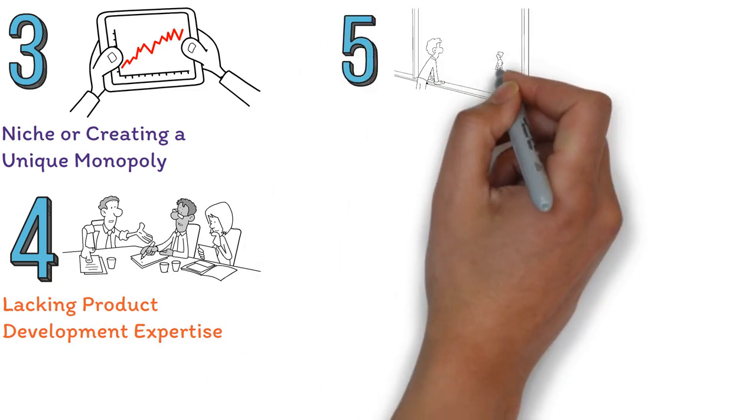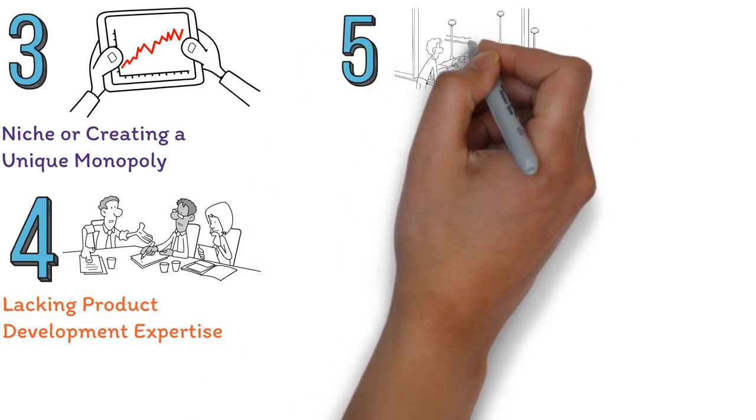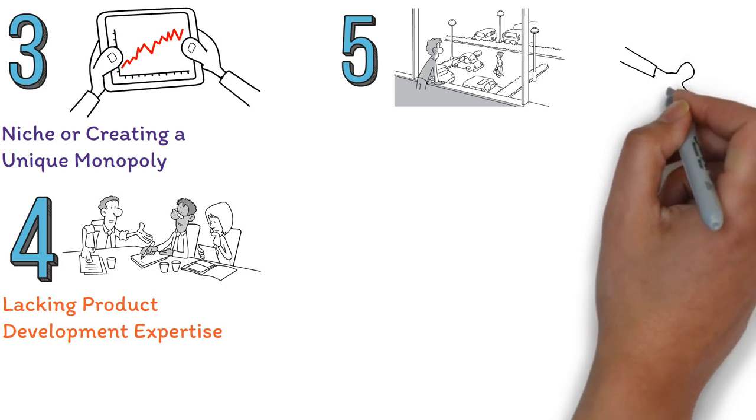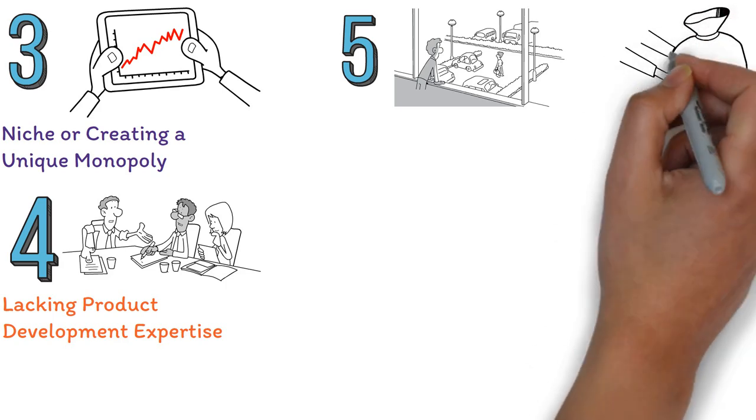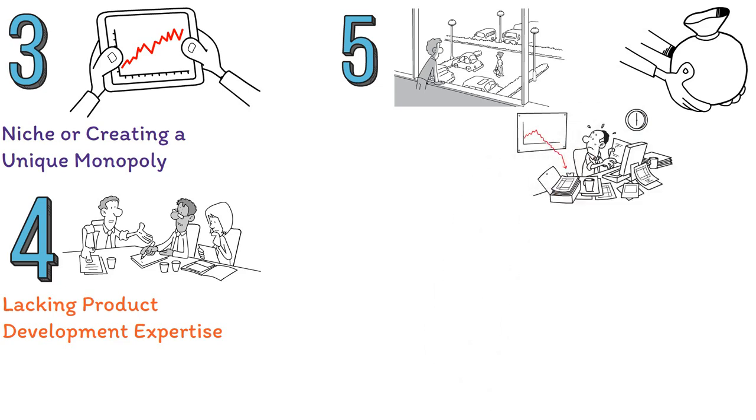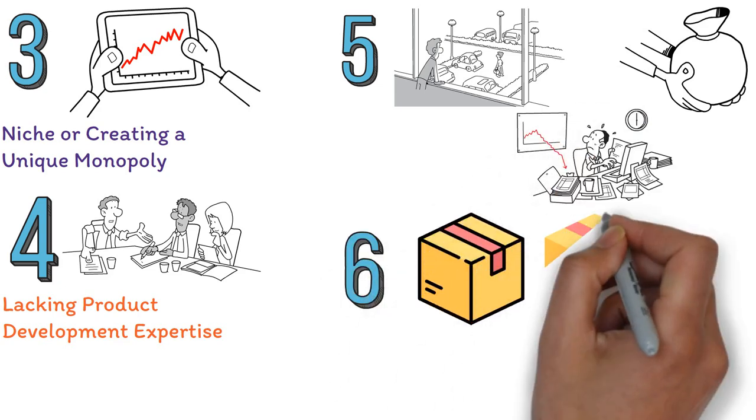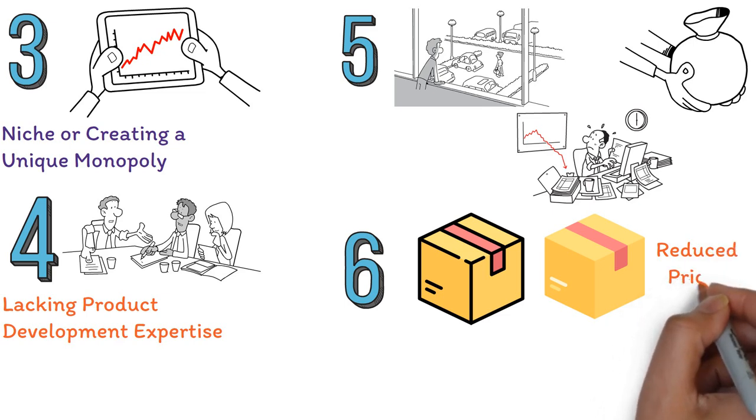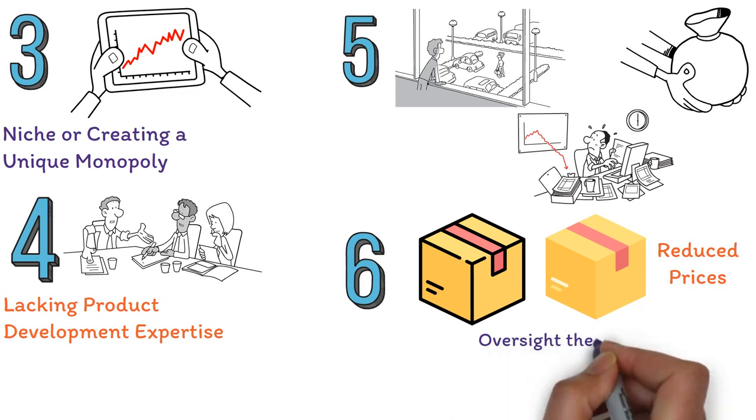Five, startups like Better Place assumed their technology didn't need robust distribution. However, after spending huge amounts of investment and low sales figures, they faced bankruptcy. Six, some were caught off guard by Chinese competitors offering similar products at reduced prices, an oversight they could have avoided.